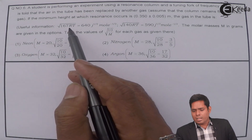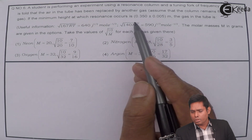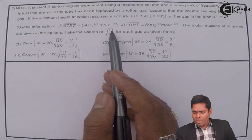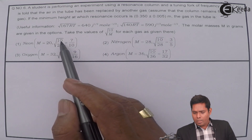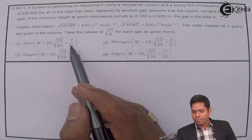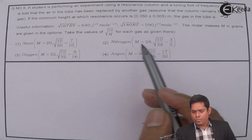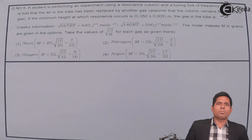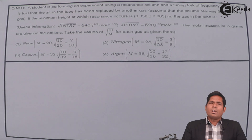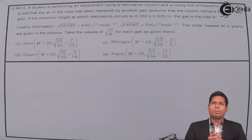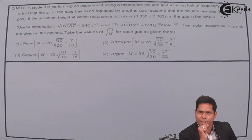Some information is given: root of 167RT has a specific value, and root of 10/M for each gas is given. You substitute these values directly without calculating. Root 10/M — for neon M is 20 so it is 7/10; for nitrogen M is 28; for oxygen 10/32; and for argon 10/36. We need to find the velocity of sound in that gaseous medium.